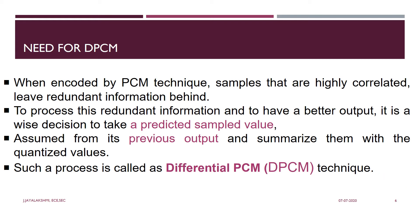In DPCM, in your normal pulse code modulation technique, we are going to predict the previous samples with the help of the current sample and find what is the difference between your current one and the previous one. This minimizes the error, or you are going to set the quantization value such that the difference between your predicted value and the current sample is very very minimum. That is going to be DPCM.